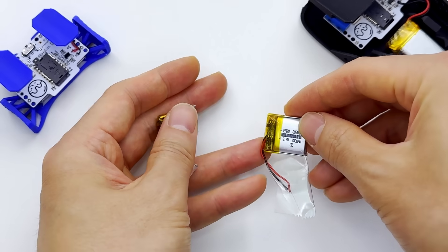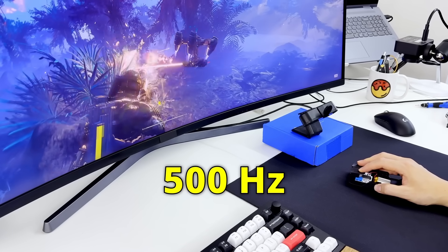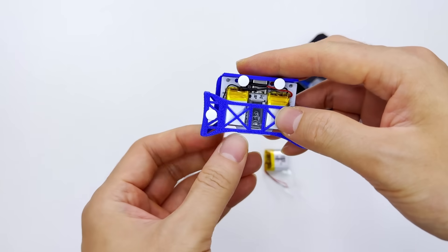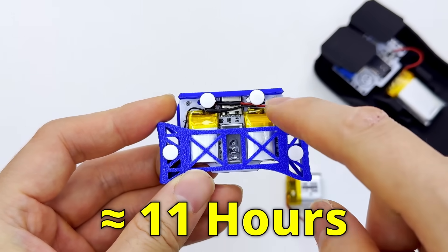But what does this actually mean in terms of battery life? At a sampling rate of 500 hertz, the mouse draws around 11 milliamp on average. So with our 120 milliamp hour capacity, we'll get around 11 hours of battery life.